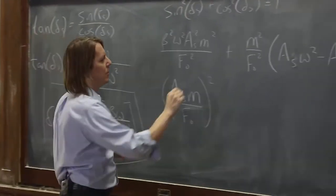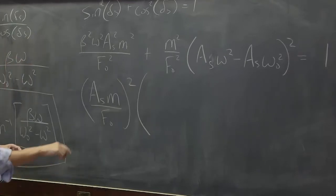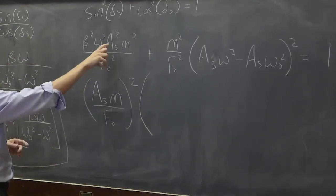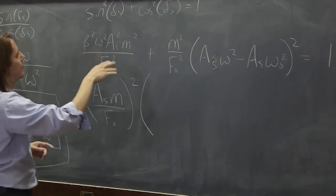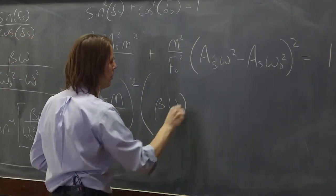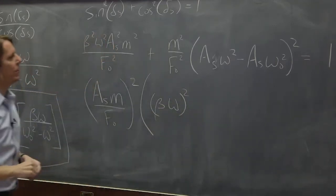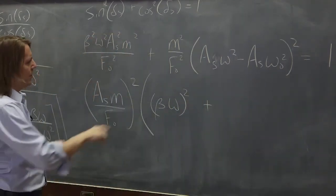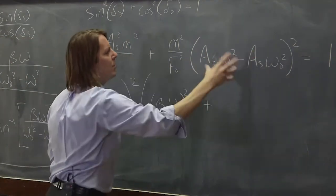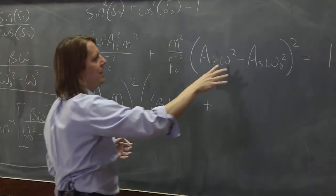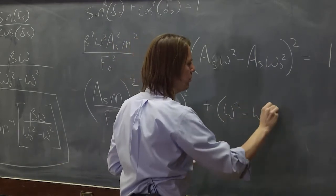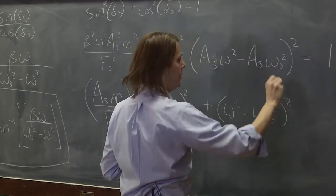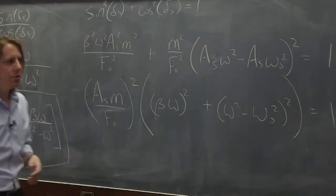OK. And then what's going to be left? Let's see. What's left on this part is beta times omega squared. All right. And then what's left of all this? We pulled out an As squared and it was squared inside of there. So that's OK. What's basically left is omega squared minus omega naught squared squared. OK. Equals 1. OK.